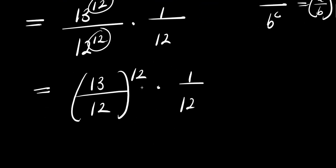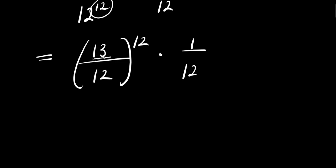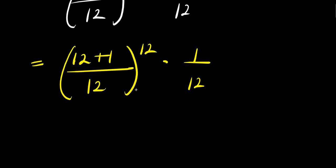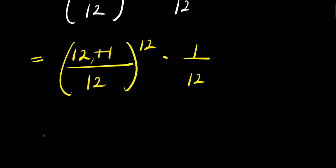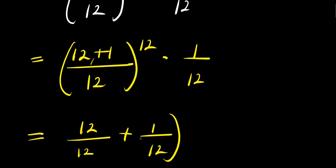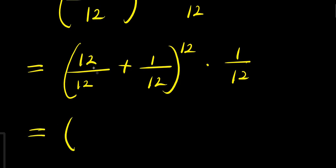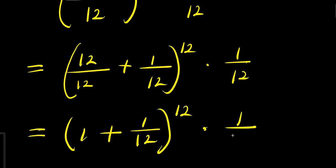Now I am going to express 13 as 12 plus 1, so (13/12) becomes (12 plus 1) divided by 12. Dividing each term in the numerator by 12, this gives us 12/12 plus 1/12, which equals 1 plus 1/12. So the whole expression becomes (1 plus 1/12) to the power of 12, times 1 over 12.